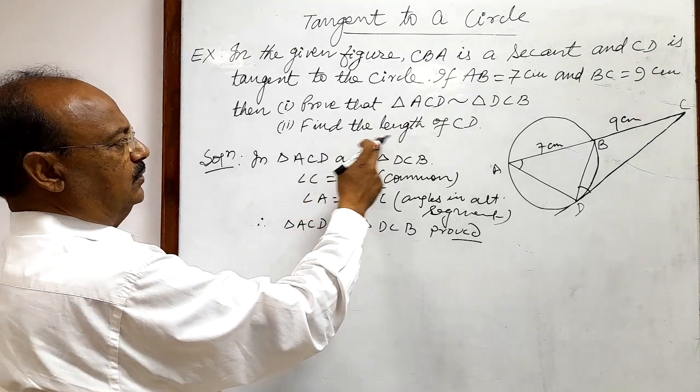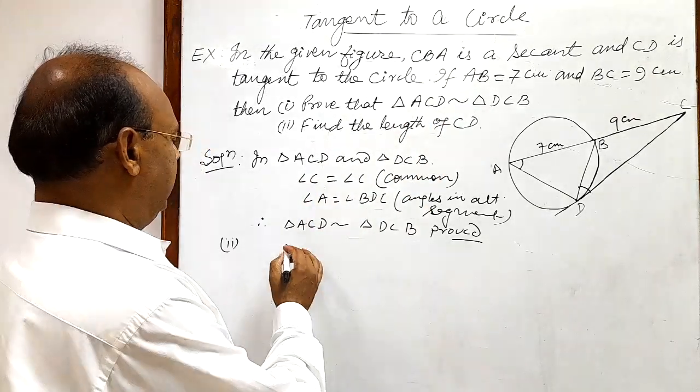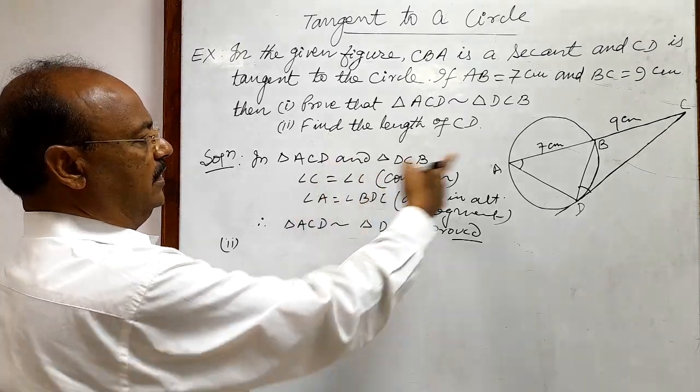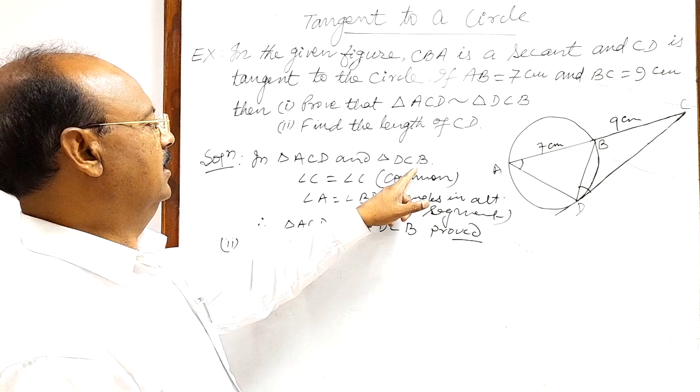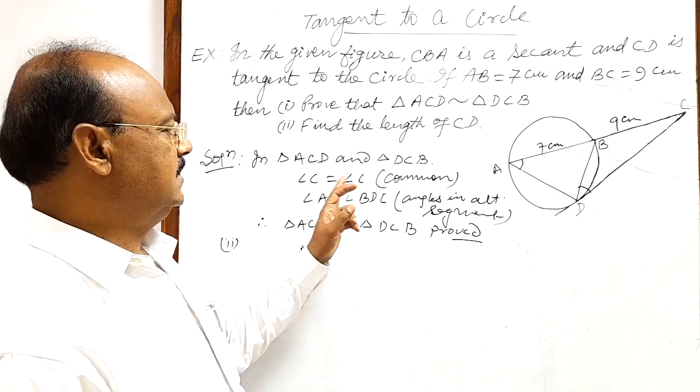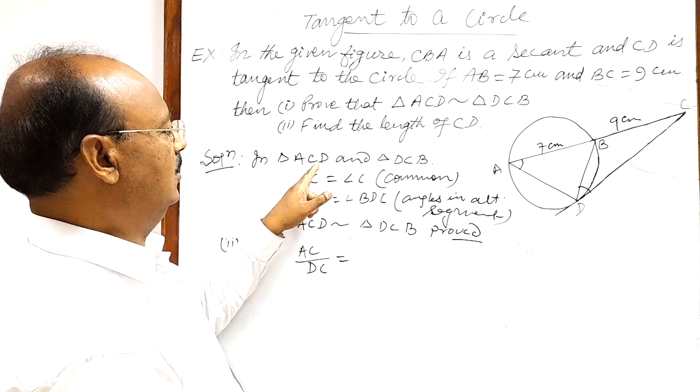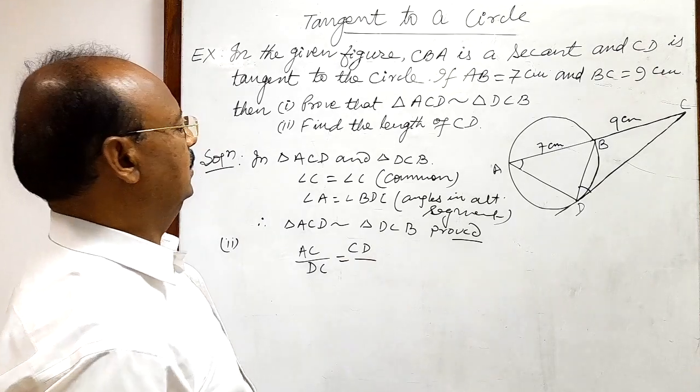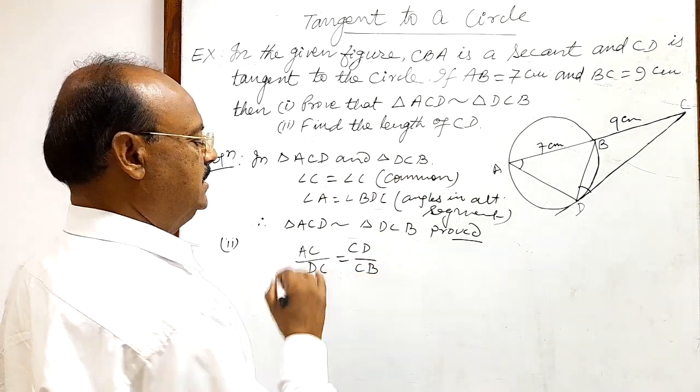Now we will find out the length of CD. So let us take the sides: in this triangle ACD, let us take the side AC, and in this triangle let us take the side DC. So AC/DC is equal to... in triangle we are taking the side CD and in triangle we are taking the side CB.